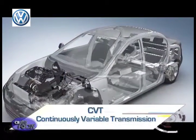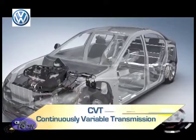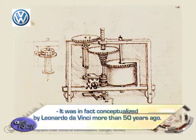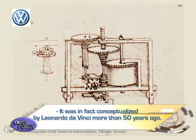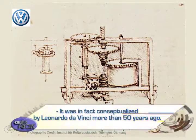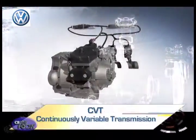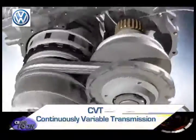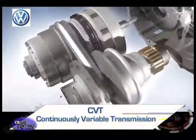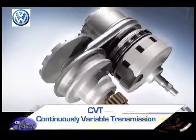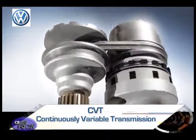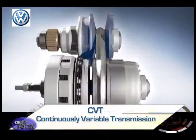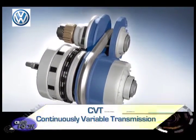The next system to be discussed is the CVT. It was, in fact, conceptualized by Leonardo da Vinci more than 500 years ago. The CVT is also an automatic transmission system, but it changes the diameters of the input shaft and output shaft directly instead of going through several gears to change the gear ratio. An infinite number of gear ratios are possible with a CVT.